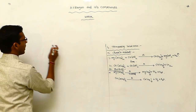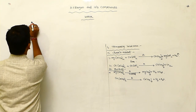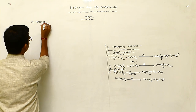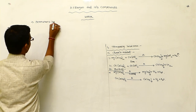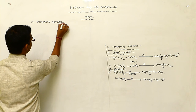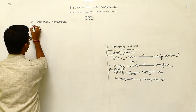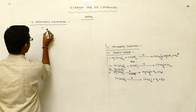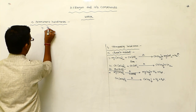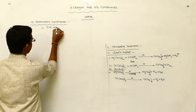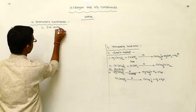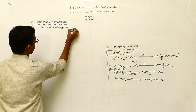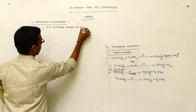Next, we discuss temporary hardness after permanent hardness. Permanent hardness can be removed by the following techniques. The first one is the ion exchange method, also called zeolite.